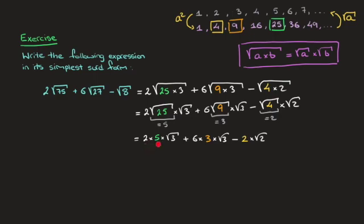Which we write as 10 root 3, plus 18 times the square root of 3, written as 18 root 3. And finally we take away from that 2 times the square root of 2, which we write as 2 root 2.